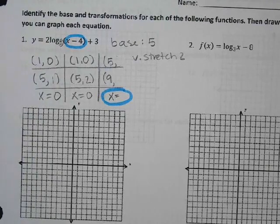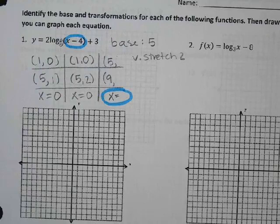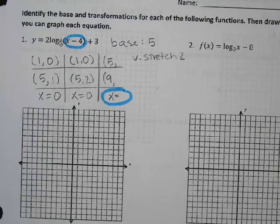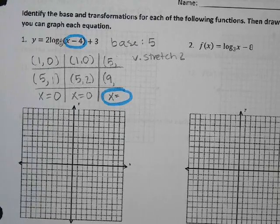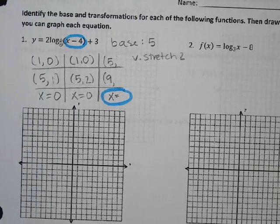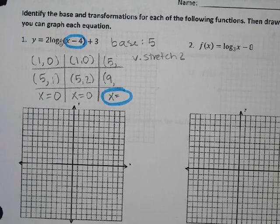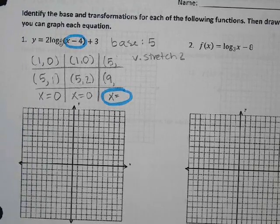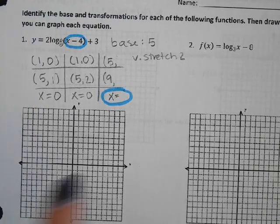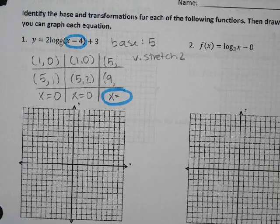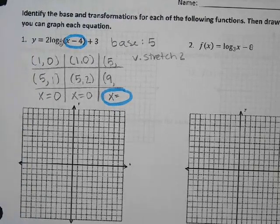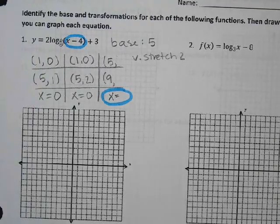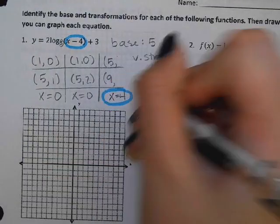So when we were dealing with this stuff yesterday, it was the number on the end, right? And we know from finding vertices that the number on the end always stays the same, right? And we know from finding the vertex before that whatever is inside, you do the opposite sign, right? So this time we're getting that vertical asymptote from the inside, and we just do the opposite sign because that's what we've always done. Does that make sense? Okay. So go ahead and draw in that vertical asymptote at negative 4.